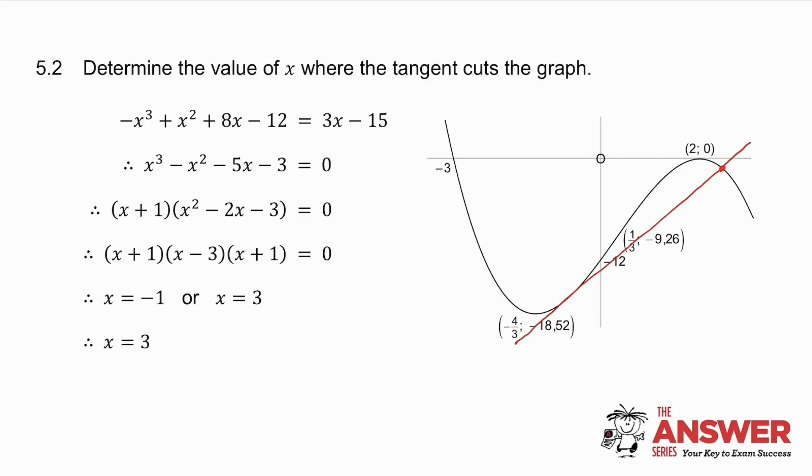It touches the graph when x is minus 1, and the question wants to know where does it cut the graph. So what I do is I make the two equations equal. So I make the cubic equal to the tangent, and I solve the cubic equation. I get two values of x. One of them is x is minus 1, which is there. The other one is x is 3, and that is the answer they want.